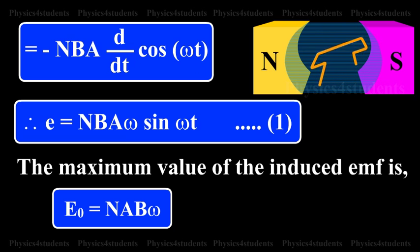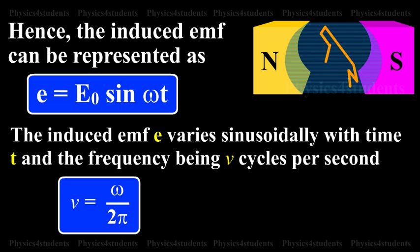The maximum value of the induced EMF is E₀ = NBAω. Hence, the induced EMF can be represented as E = E₀ sin ωt.